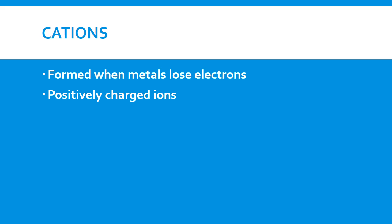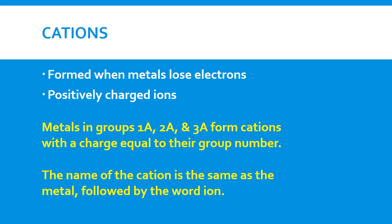Let's start off with cations. Remember, cations are formed when metals lose electrons. And because they lose electrons, they now have more protons than electrons. That means they have more positive charge than negative charge, so they have a positive charge. The metals in group 1A, 2A, and 3A form cations with a charge equal to their group number.